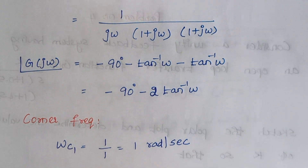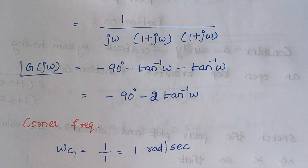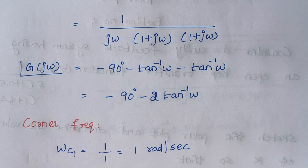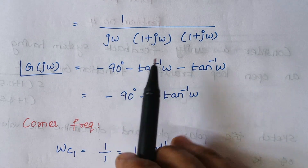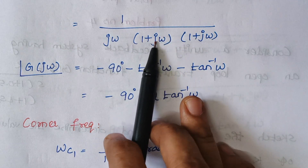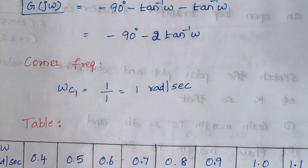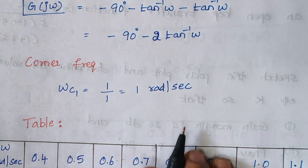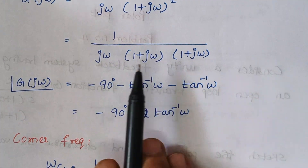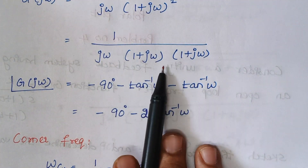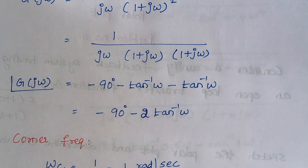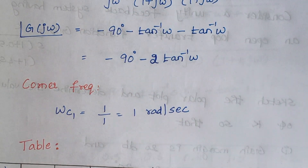Next we find the corner frequencies. To find a corner frequency, take the reciprocal of the coefficient of omega (or s). Here the coefficient of omega is 1, so the reciprocal is 1. Since we have two identical terms, there is only one corner frequency at omega equals 1.